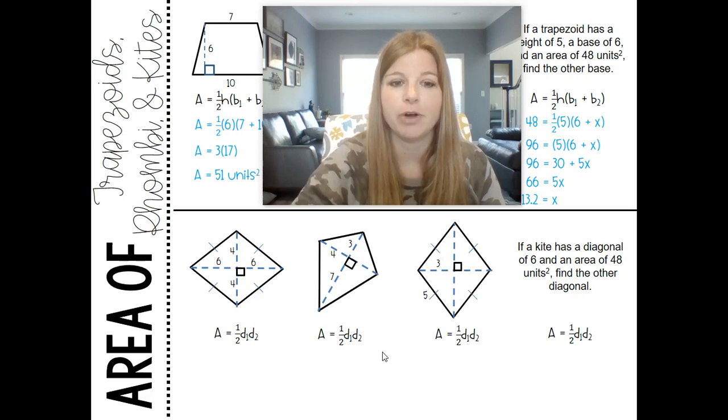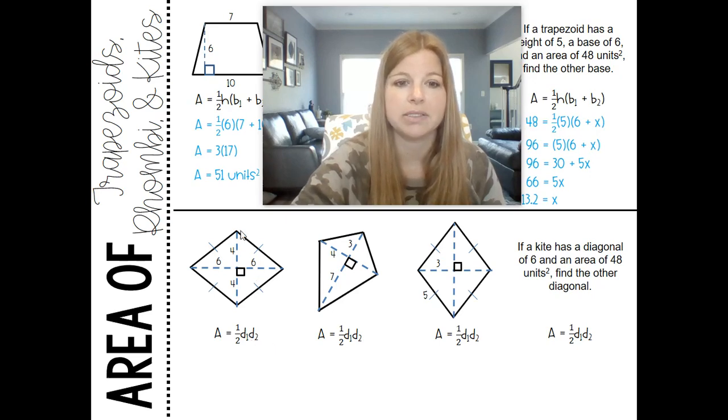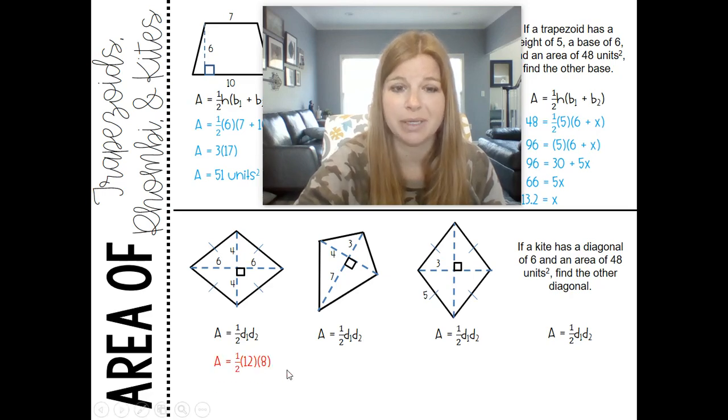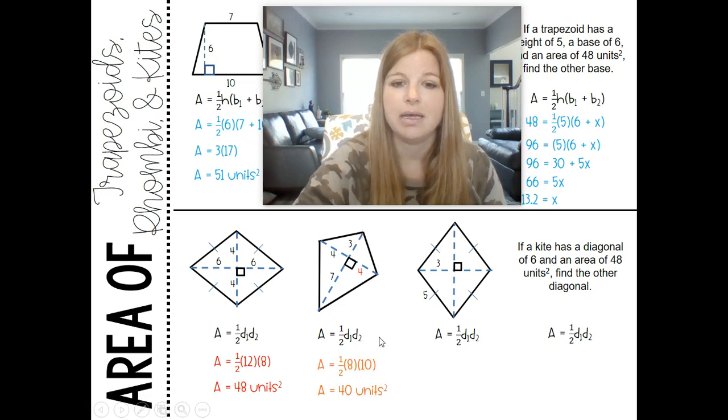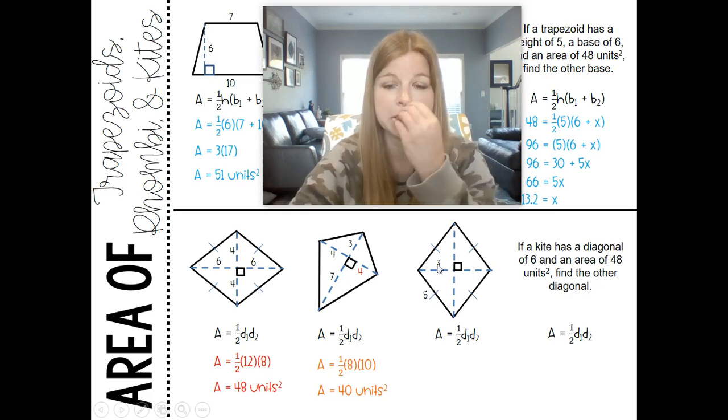Rhombi and kites: same formula, one half diagonal one times diagonal two. So here I see my diagonals are eight and twelve, so this one ends up being a really easy problem. It's just 48 units squared. This one here, something I reminded you about kites: one of the diagonals is bisected. So if this is four, then this other part is four. So I have a diagonal of eight, a diagonal of ten, and I get an area of 40 units squared.